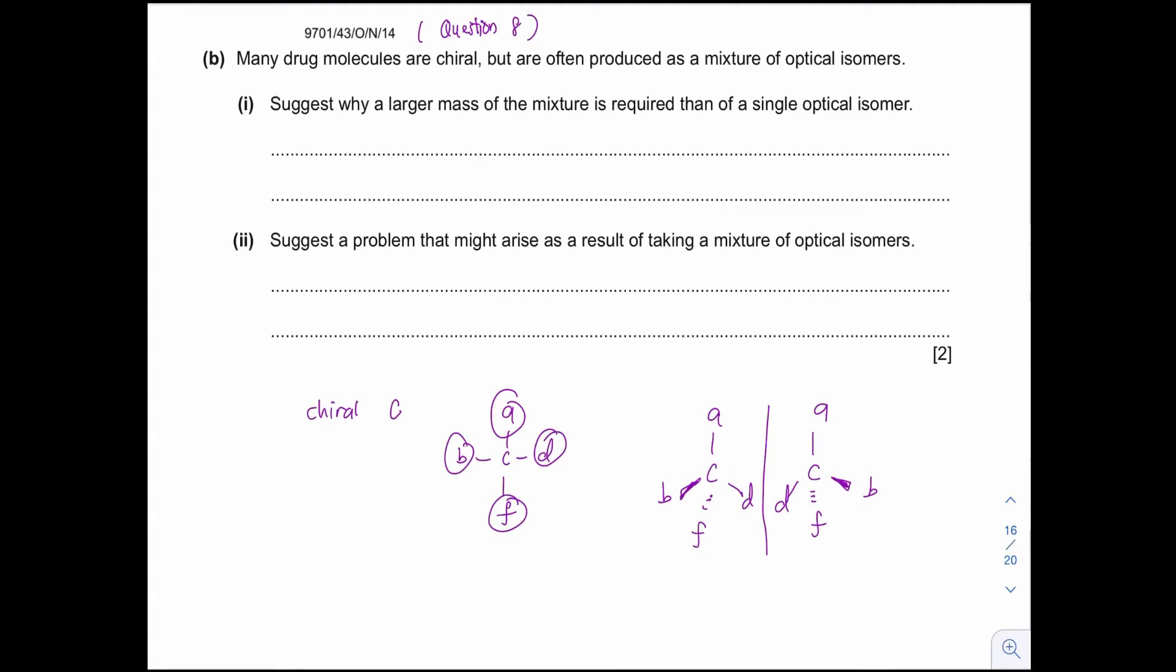That is because when the drug is being produced, they often exist in the mixture form. However, only one of the isomers is active. What I mean by active means it is able to cure the disease, but the other one might bring harm to the person who takes the drugs.